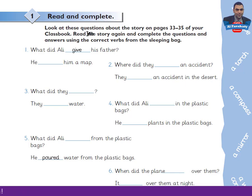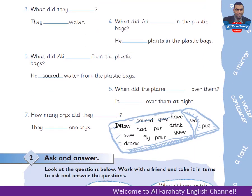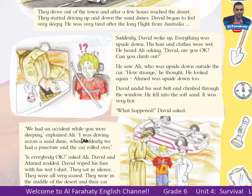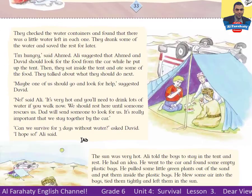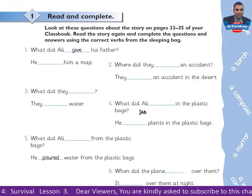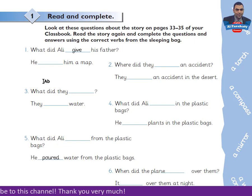Activity 1: Read and complete. Look at these questions about the story on pages 33 to 35 of your class book. Read the story again and complete the questions and answers using the correct verbs from the sleeping bag. You are asked to read this story — read it silently. Then insha'Allah in the next lesson you will listen to it.